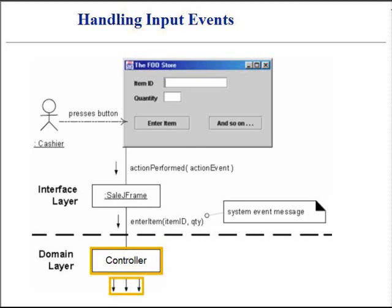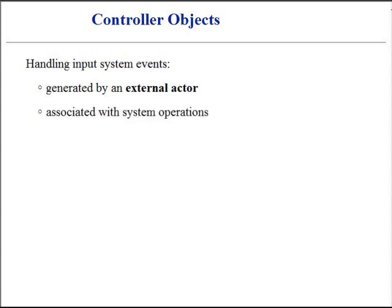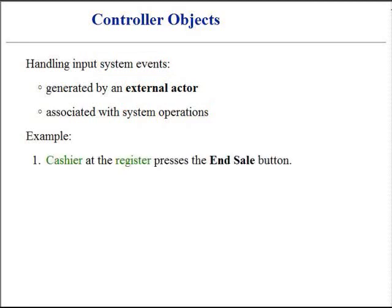The controller is a kind of facade onto the business layer. Messages and events originated in the user interface layer are received by the controller. Who should be responsible for handling an input system event? An input system event is an event generated by an external actor. System events are associated with system operations. System operations occur in response to system events. For example, when a cashier who is using the register presses the End Sale button, the register generates a system event indicating that the sale has ended.